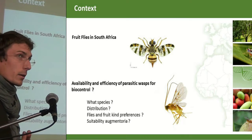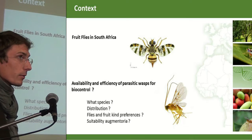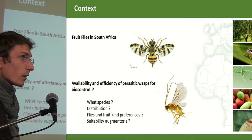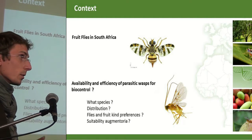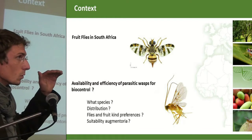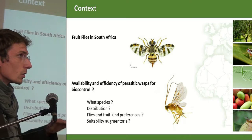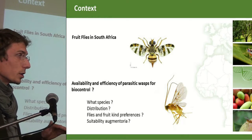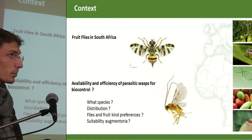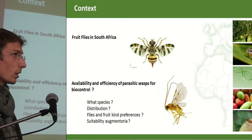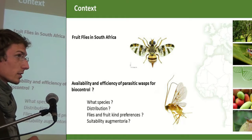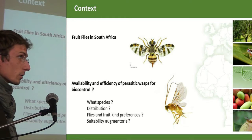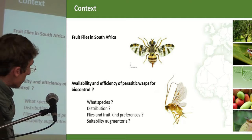Parasitoids will never destroy the entire population of fruit flies in the orchard, but they contribute to keeping a low level of population in the natural lands nearby the orchard and avoid a continuous spillover of pests into the orchard. That's what makes them interesting to look at.